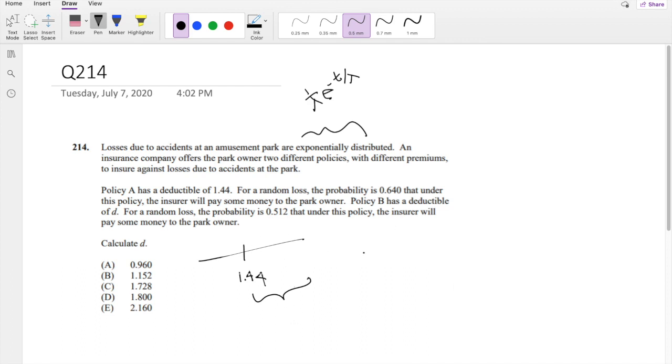And policy B has a deductible D. And for a certain random loss, the probability of 0.52 that under this policy, they will pay some money to the owner. So again, this is the probability that they're looking for.